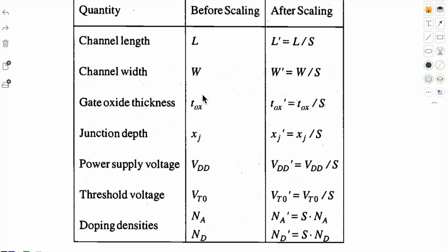Now let's see this table, what parameters vary in constant field scaling. First one is channel length, which is scaled down by the scaling factor. Width is also scaled down, thickness of oxide is also scaled down, same for junction depth, and voltage supply. Potential also has to be reduced, so it is also scaled down. Threshold voltage is also scaled down. And the doping densities, we saw in previous video, the doping densities increase by this scaling factor.